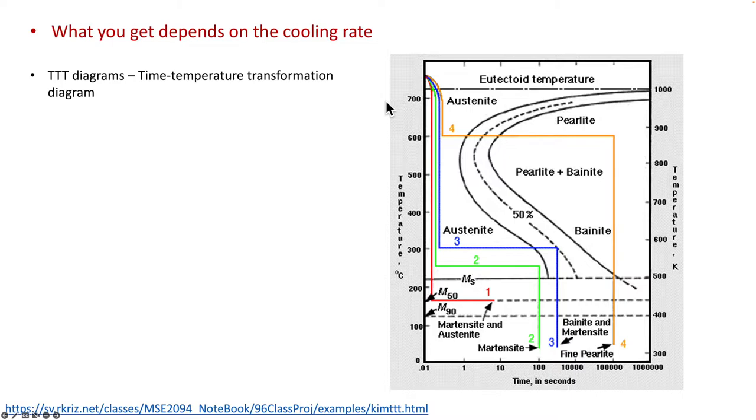The diagram can be divided into a few regions. In the first region here, this is austenite. Then pearlite, pearlite plus bainite, bainite. You also see the m here, m stands for martensite. ms means martensite starting temperature. m50 means 50% martensite and 50% austenite. m90 means 90% martensite and 10% retained austenite.